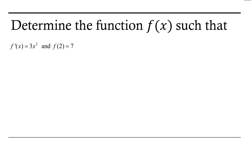Welcome. Let's take a look at finding a function that satisfies a couple of characteristics. In this particular case, we want a function whose derivative is 3x squared, and which, when we evaluate the function at 2, the output is 7. So to start the process, let's go ahead and find a function whose derivative is 3x squared. We're going to use the antiderivative to help us with this. So my function I'm looking for is the antiderivative of 3x squared dx.